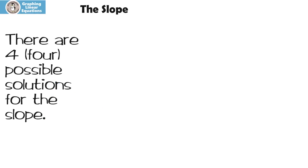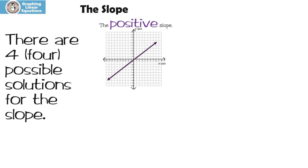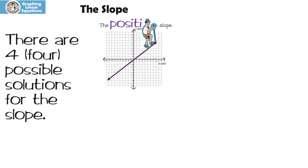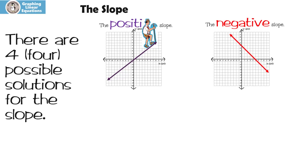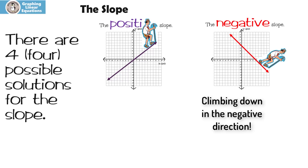Before we get too far, there are four possible solutions for the slope. The first possibility is that our slope could be positive — that means our line goes up from the left to the right. Here's our yodeler guy — he's climbing up in the positive direction. We could also have a negative slope, which means our line goes down when we go from left to right.